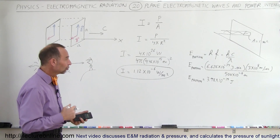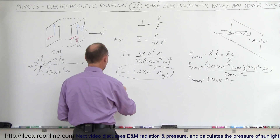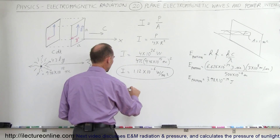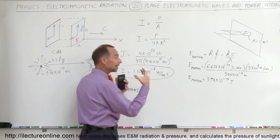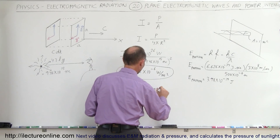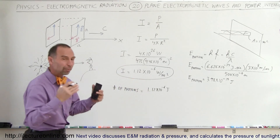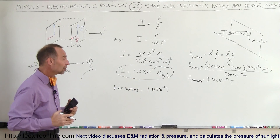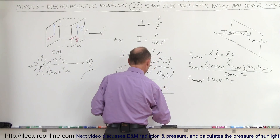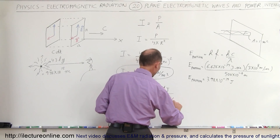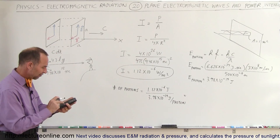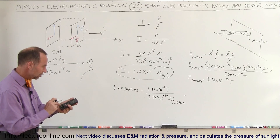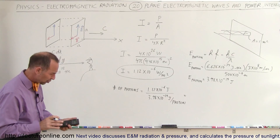Now we divide the intensity by the energy per photon. The number of photons that hit one square meter of the Earth every second equals the energy from Alpha Centauri — 1.12 times 10 to the minus 6 joules per square meter per second — divided by the energy per photon, 3.98 times 10 to the minus 19 joules per photon. That gives us 2.82 times 10 to the 12th photons.